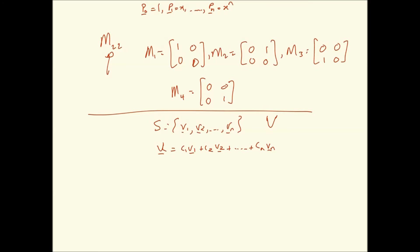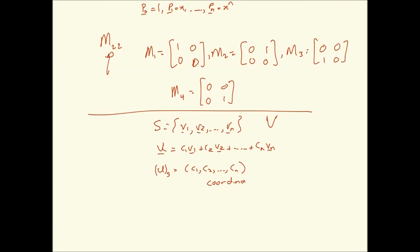If we construct a vector whose coordinates are the scalar values C1, C2, ..., CN from that linear combination, we call this the coordinate vector of U relative to S.